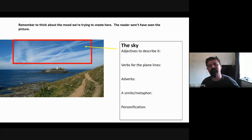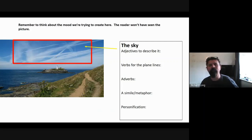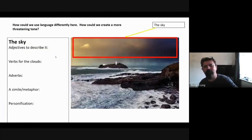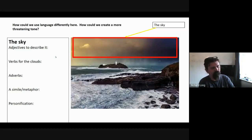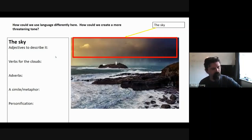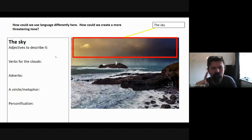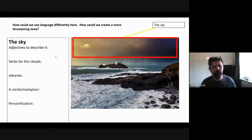What I'm going to ask you to do is: there are five things — I'll give you about three minutes to see what you can come up with for the sky in the dark picture. Adjectives to describe it, verbs, adverbs, simile or metaphor, personification — and we'll see how yours compare with mine. Actually, what we'll do is give you about 40 seconds and we'll just do adjectives first, then verbs, then adverbs, then simile or metaphor, then personification. Forty seconds — adjectives, put them in the type box — go.